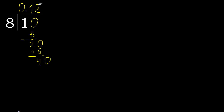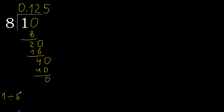40. 8 multiplied by 5 is 40. 40 is not greater. OK, subtract — result is 0. Therefore finish. 1 divided by 8 equals 0.125.